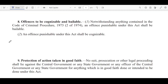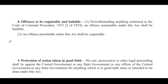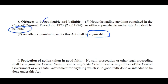Section No. 8: Offenses to be Cognizable and Bailable. Notwithstanding anything contained in the Code of Criminal Procedure 1973, an offense punishable under this Act shall be bailable, and an offense punishable under this Act shall be cognizable. So Section 8 tells us the offenses are cognizable and bailable.